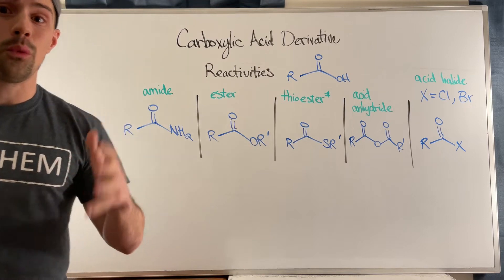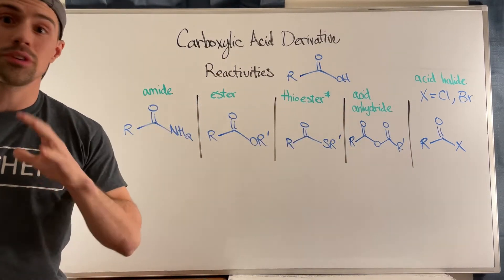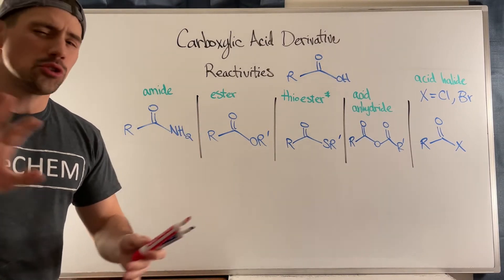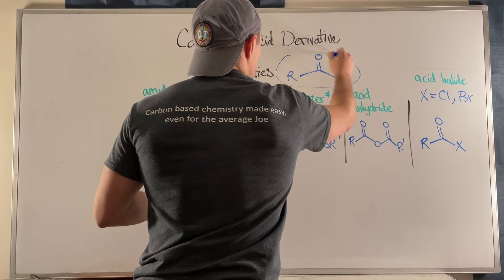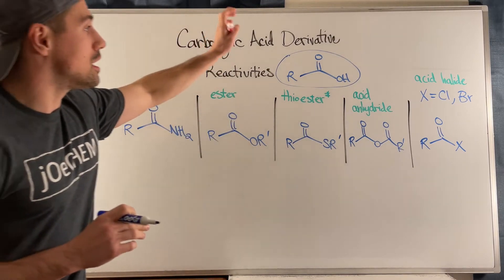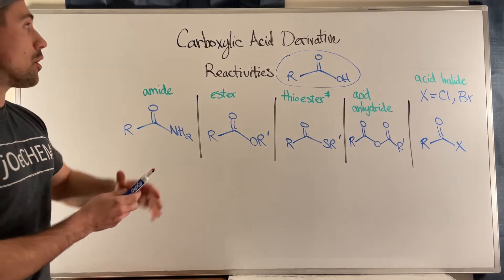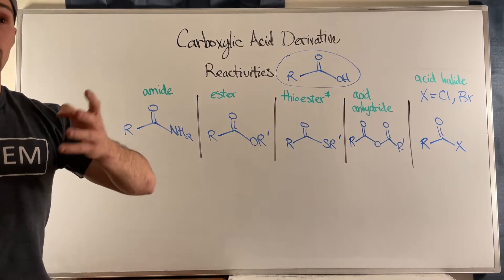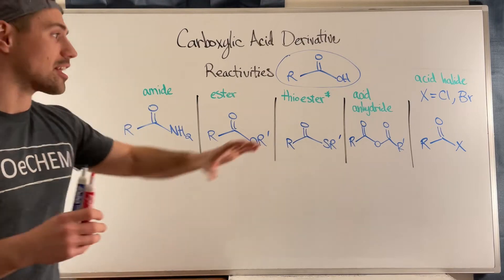Before we talk about the difference in reactivities of these different carboxylic acid derivatives, I just want to make sure we're on the same page in terms of what a carboxylic acid derivative is. R symbolizes some generic chain — maybe it's nothing, maybe it's just a hydrogen. What I'm showing you is just the functional group that makes a carboxylic acid what it is. A carboxylic acid derivative is something that looks like a carboxylic acid and originated from one.